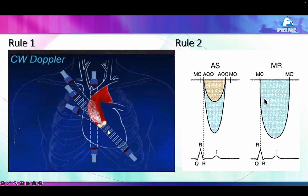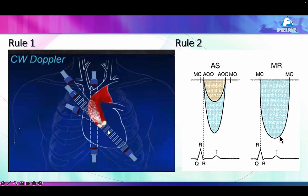Many times there is mitral regurgitation and there is a mix of these two jets together when you are doing CW. CW does not recognize where the jet is coming from — it picks up every gradient along that line, unlike pulsed Doppler. So the MR jet can mix up with the aortic stenosis jet. To differentiate: the MR jet comes immediately after the R wave, but the aortic jet comes a little after due to the isovolumic contraction period. The configuration is also different.